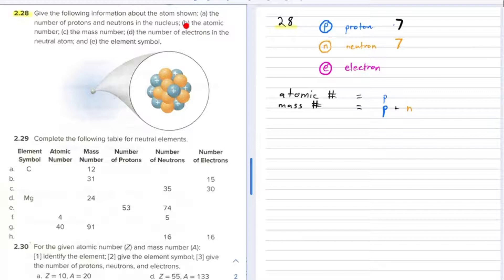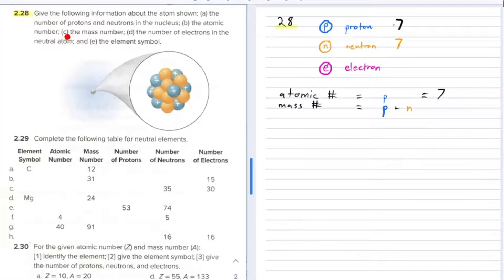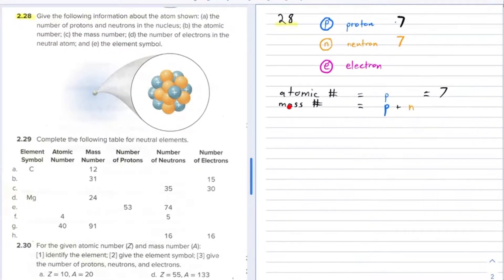Part B is the atomic number. Now the atomic number is simply the number of protons. There are seven protons, so the atomic number is 7. Part C, the mass number.